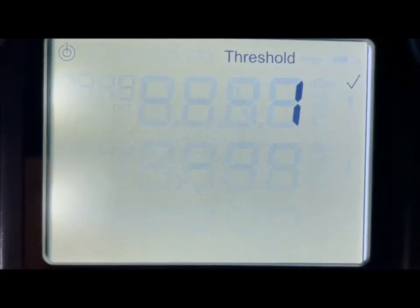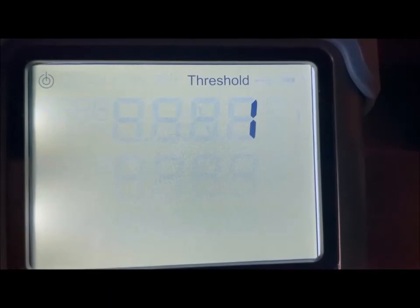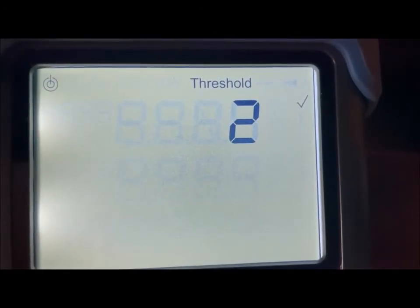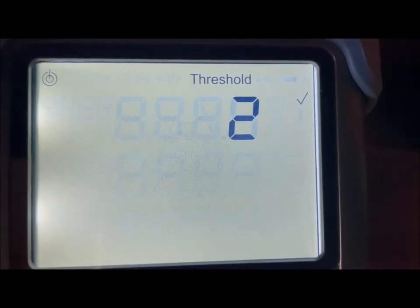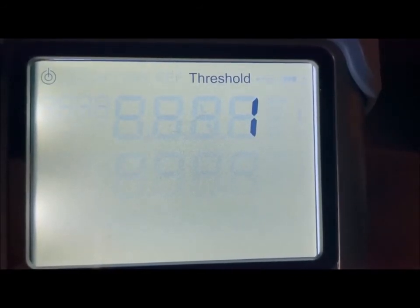Values are automatically saved. Select which threshold profile will be set to default. In this example, profile 2 has a checkmark next to the number, which means it is currently the default profile. To change this default to profile 1, select the profile and press the store key.